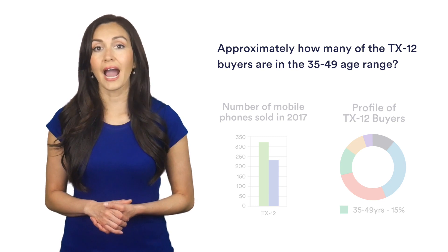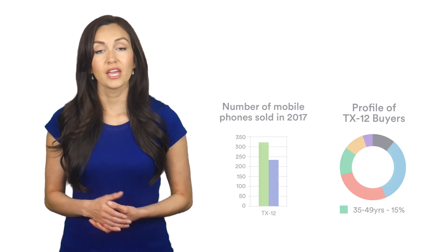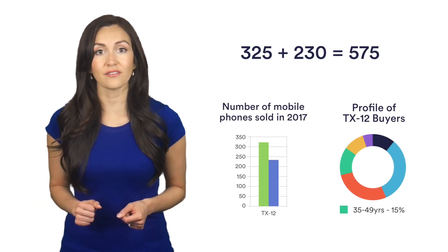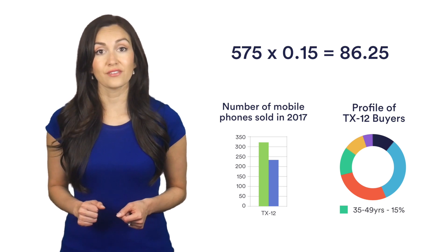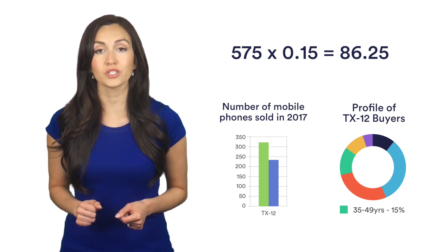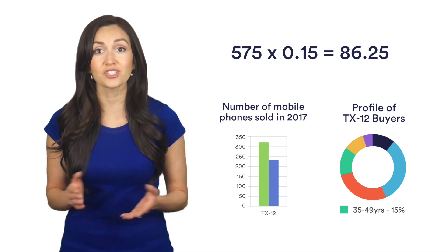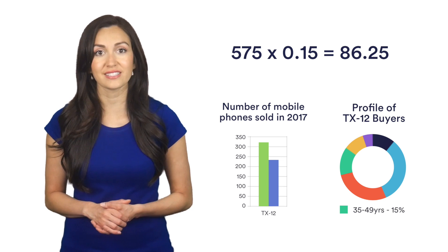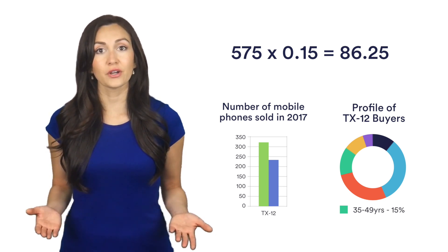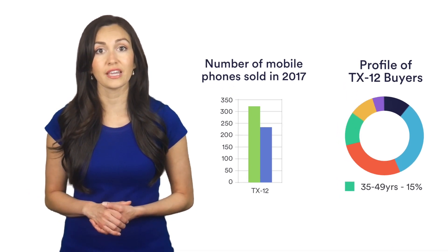For example, approximately how many of the TX12 buyers are in the 35 to 49 age range? 325 plus 230 equals 575. 575 times 0.15 equals 86.25. Don't worry that none of the suggested answers match the answer we found in our calculations. We are only looking for an approximate number. It is fair to assume that D is our answer, as it is very close to the answer we found.